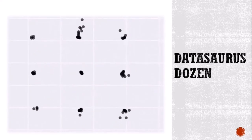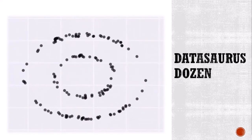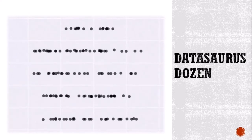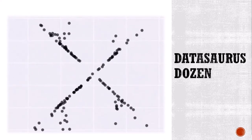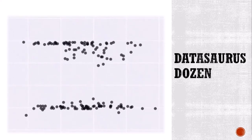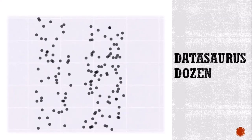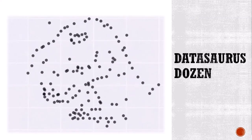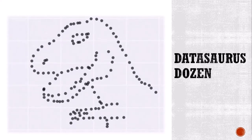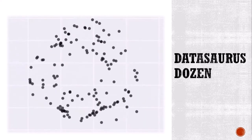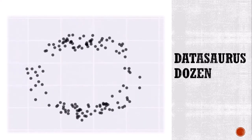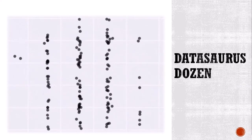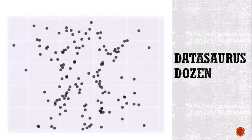45 years later, two scientists published a paper updating Anscombe's Quartet for the 21st century. Their version coerces data into 12 unique shapes, including the outline of a dinosaur lovingly nicknamed the Datasaurus. As with the original quartet, the Datasaurus Dozen are essentially indistinguishable from one another using simple summary statistics. But once again, the data, once plotted, tells us a very different story.